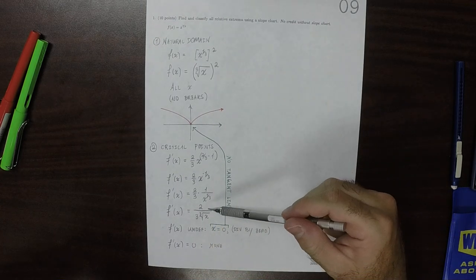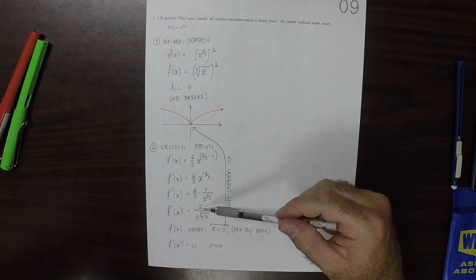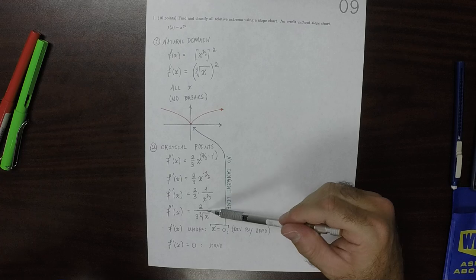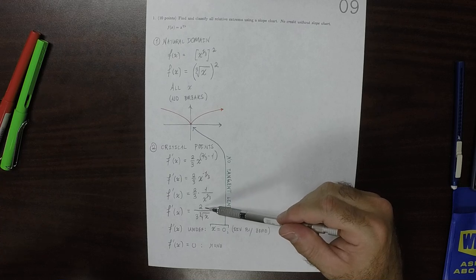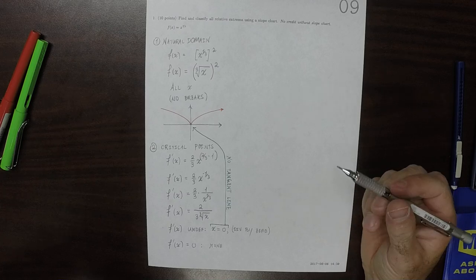Because, there's nothing in the numerator, there's only a two. The only way to get this fraction to be zero is if the numerator is zero. But the numerator is always two, so there's nowhere the derivative is zero.